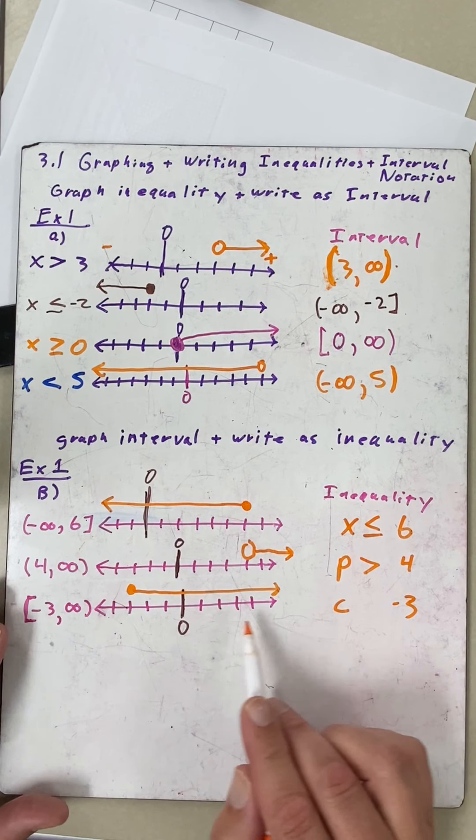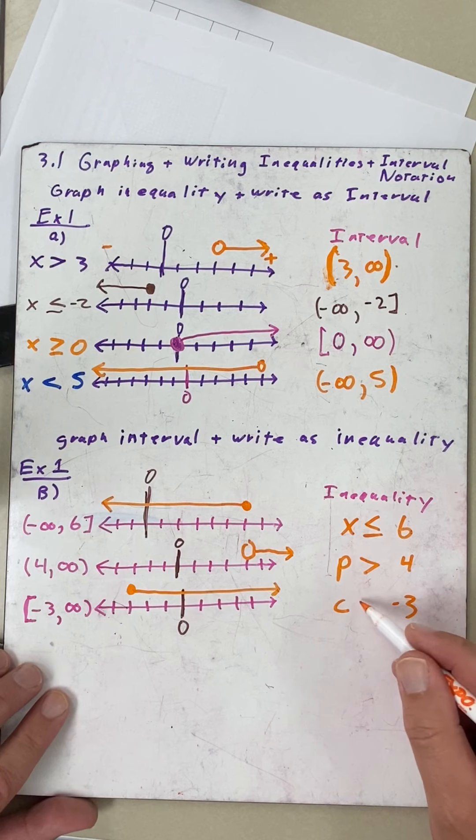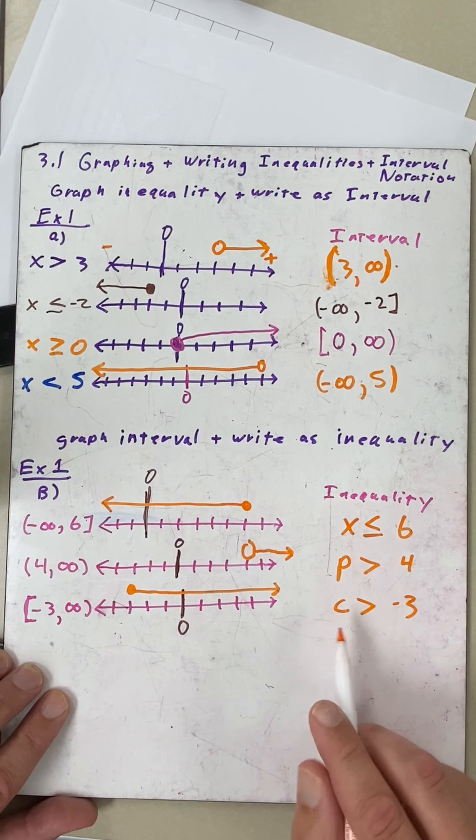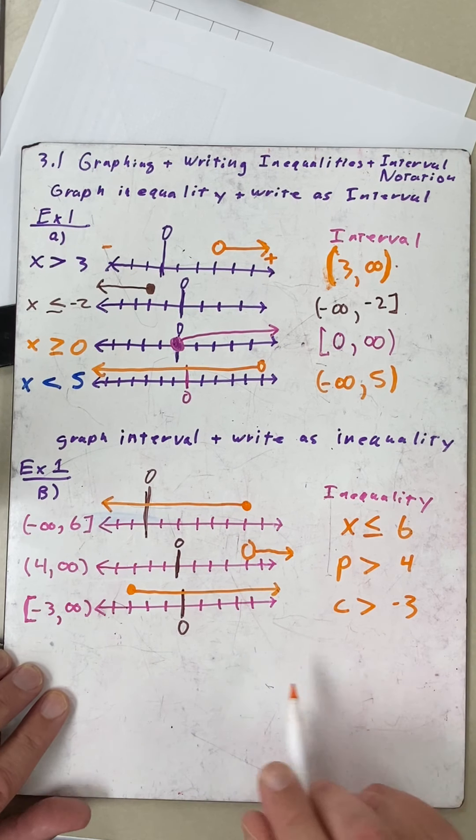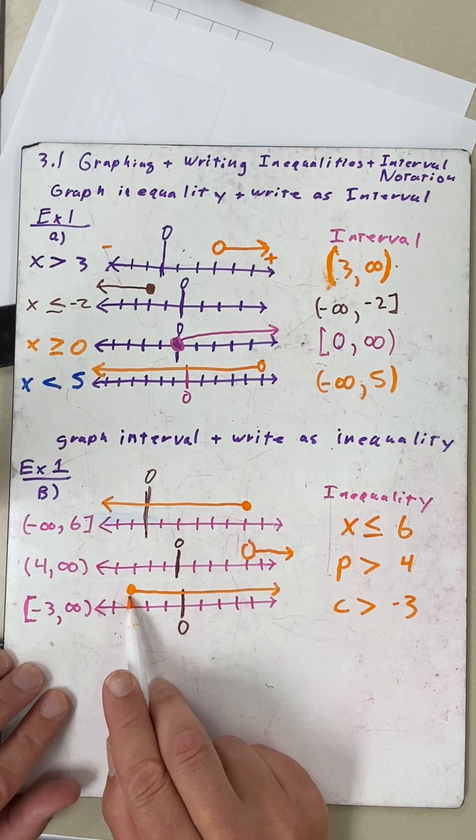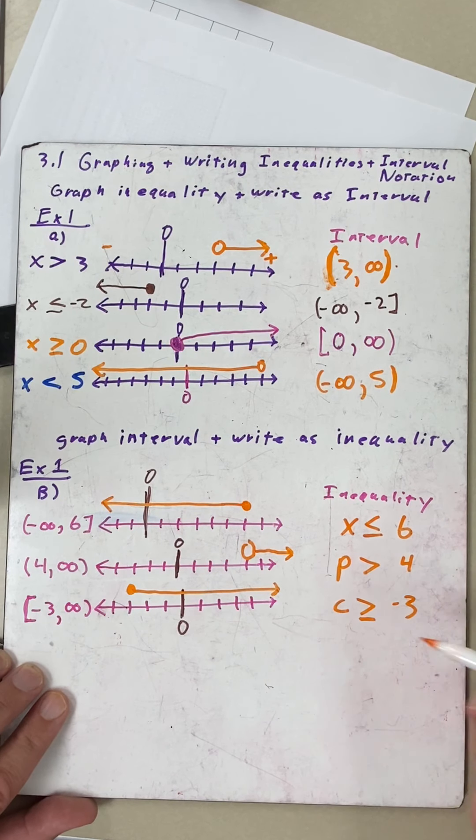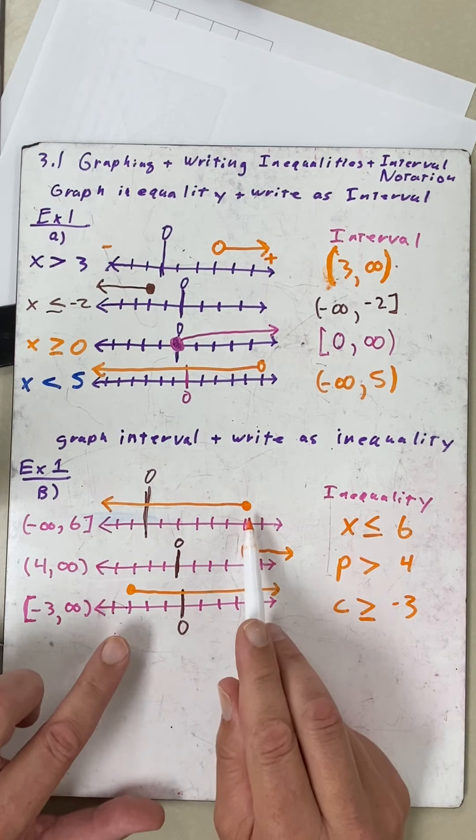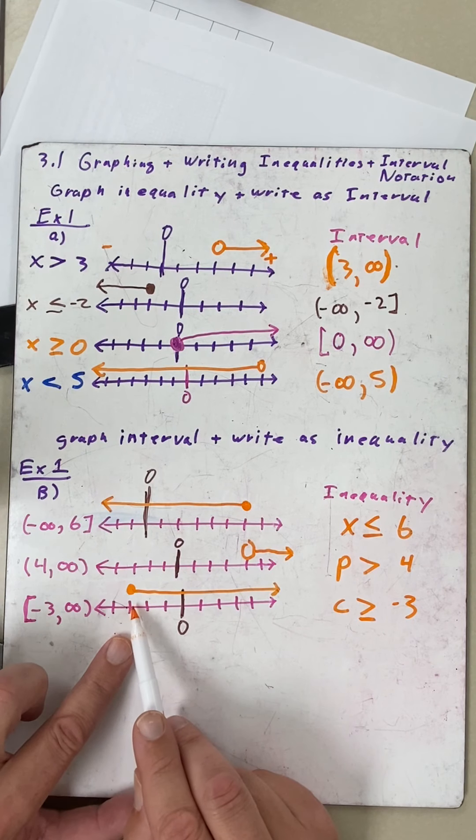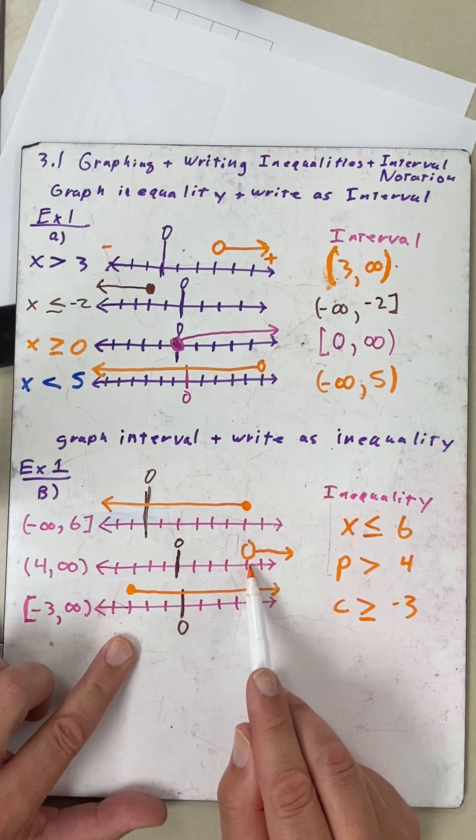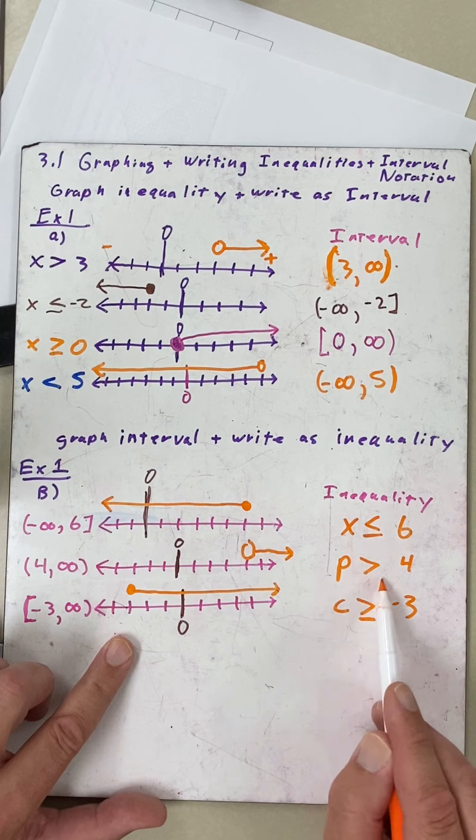Now the arrow is going to the right, which is greater than. If I pick any number over here to make it true, I just have to be greater than negative three. Because it's closed, we put in an equal to. So these two include six and negative three as a solution, where this one—four does not work because it does not equal to four.